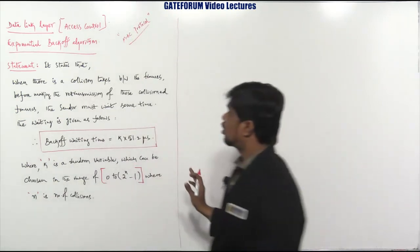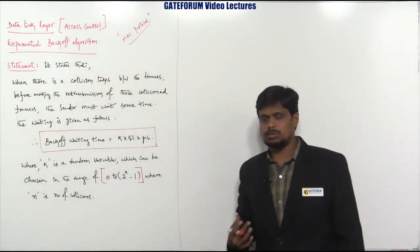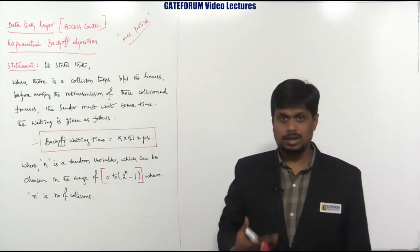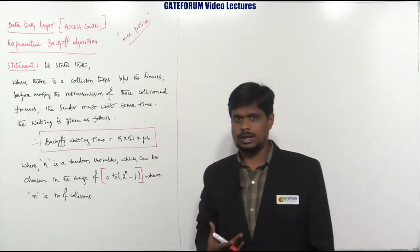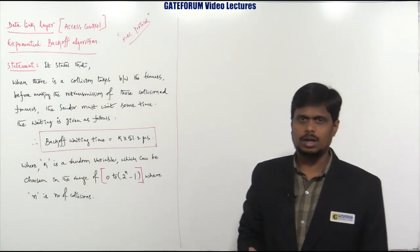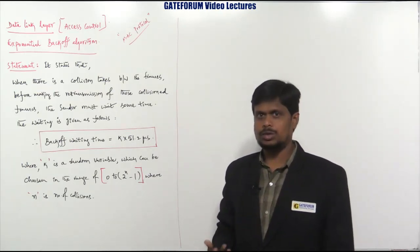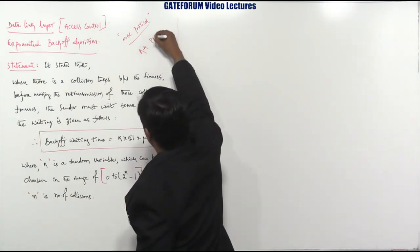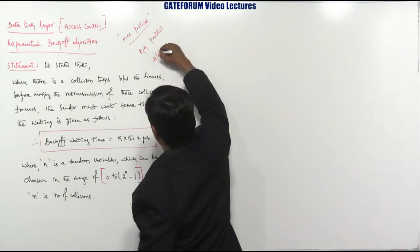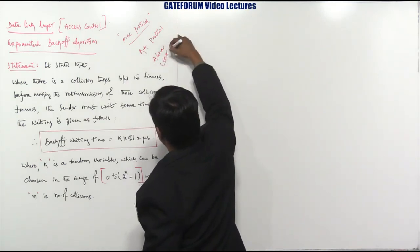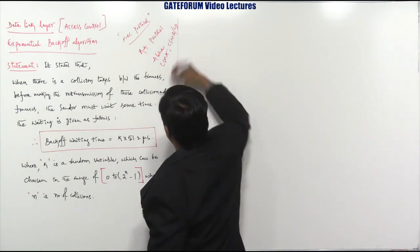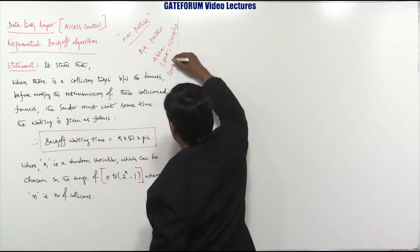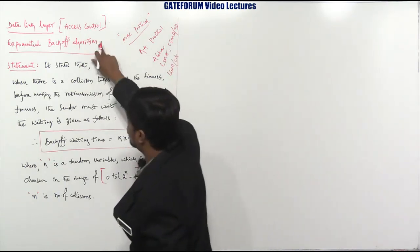The MAC protocols we have include Aloha, CSMA, CSMA-CD, CSMA-CA, TDMA, FDMA, SDMA, poll, select, and reservation. Among those MAC protocols, if you consider random access protocols like Aloha, CSMA, CSMA-CD, and CSMA-CA, these MAC protocols are working based on this particular exponential backoff algorithm.